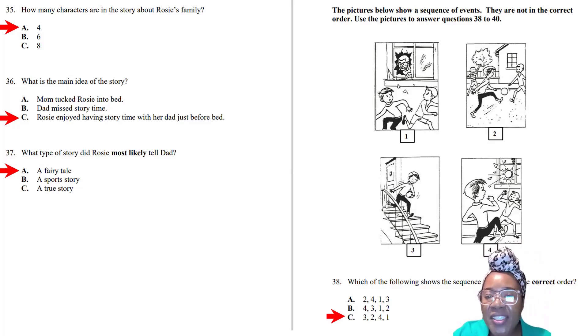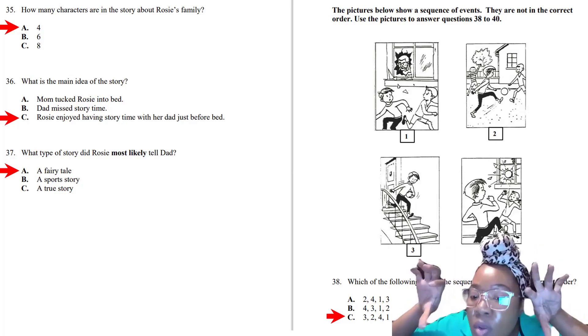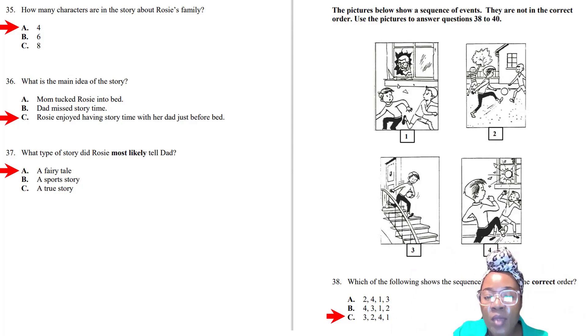We have some pictures to put in order. What's the first thing likely to happen? Picture three, with the boy going down the stairs. Then picture two, two boys playing football outside. Picture four, one boy kicked the football and it broke the window. Lastly, picture one, the window is broken, somebody angry is looking out, and the boys are running away.